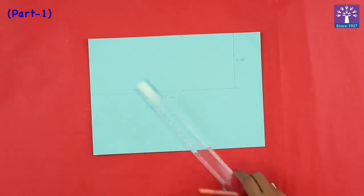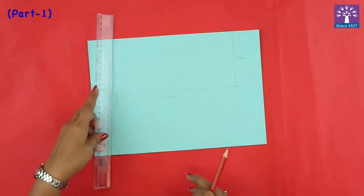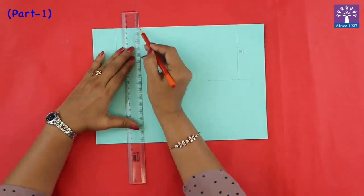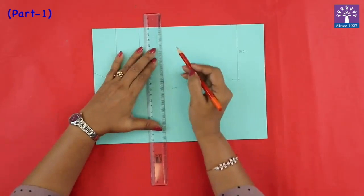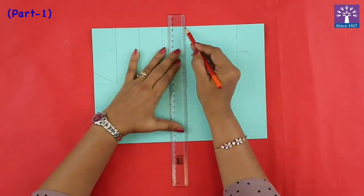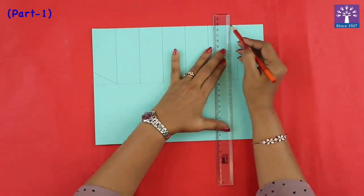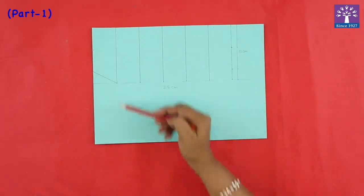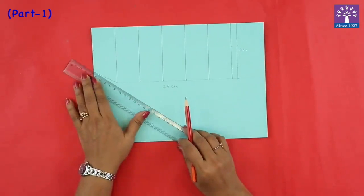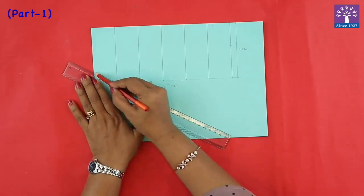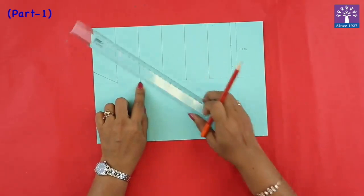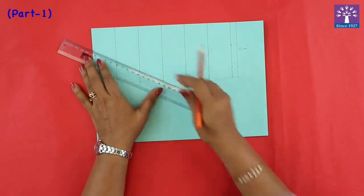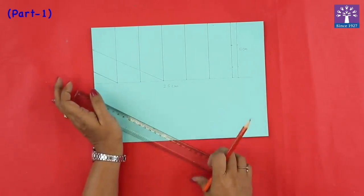Now first before we start you will join the dots like this. Once we finish drawing these lines we will start joining these dots. So first dot, then leave this line and second, again we leave one line and third.